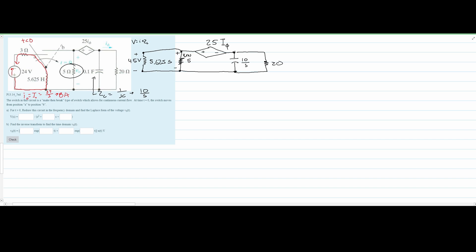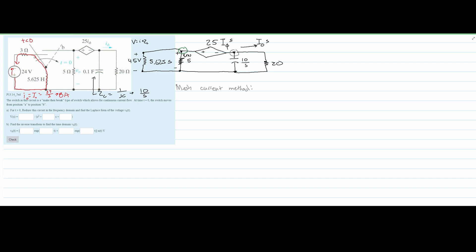Now everything in the redrawn S-domain circuit looks good. We need to convert the remaining I₀ to I₀(s), since we are now in the S-domain. From here, we want to find V₀(s) using the mesh current method. We have two nodes — a gray node and a green node — and we will look at the voltage and current flowing through all the branches at each node.